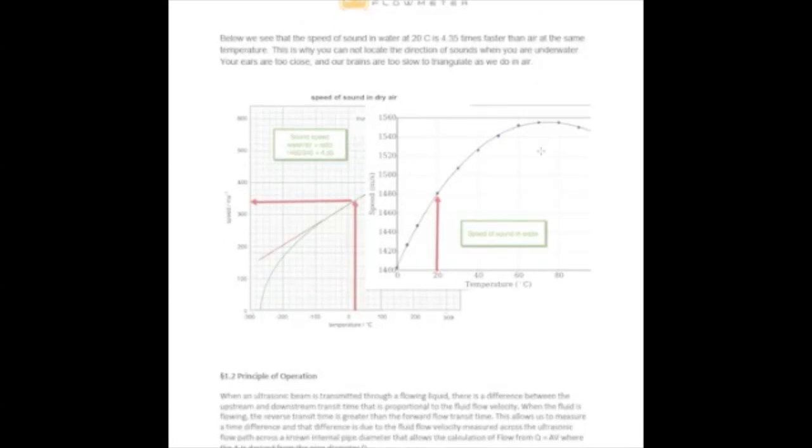So you can have an understanding of the difference in sound speed. The sound speed in water is 1,400 meters per second. The sound speed in air is 340 meters per second.